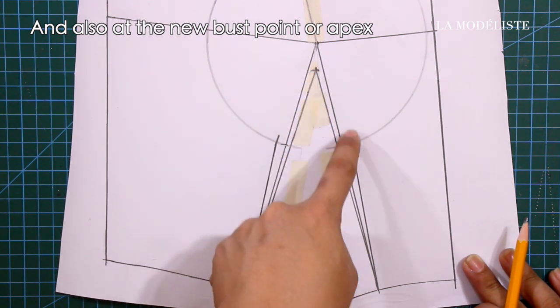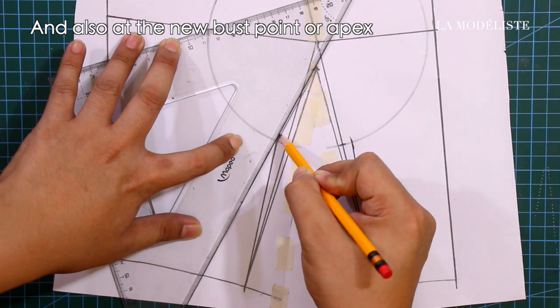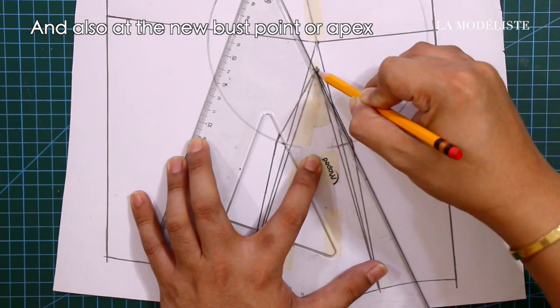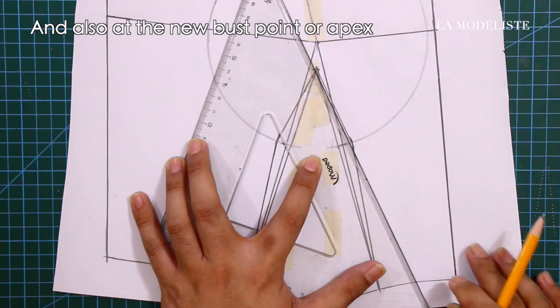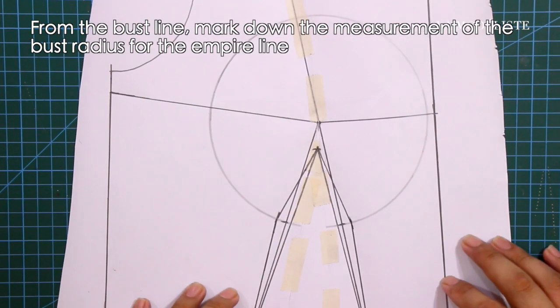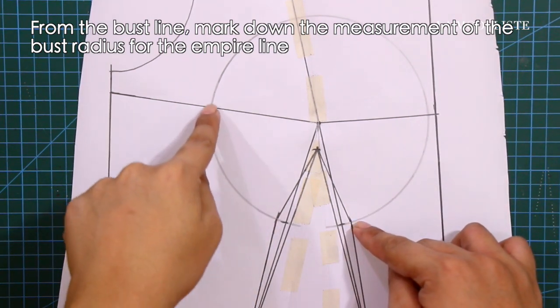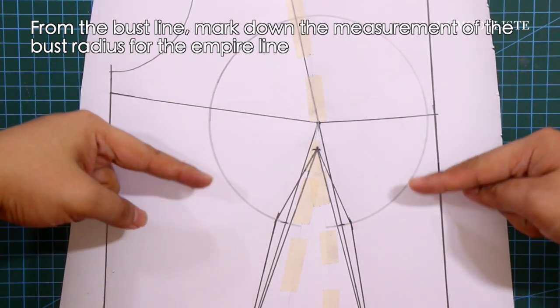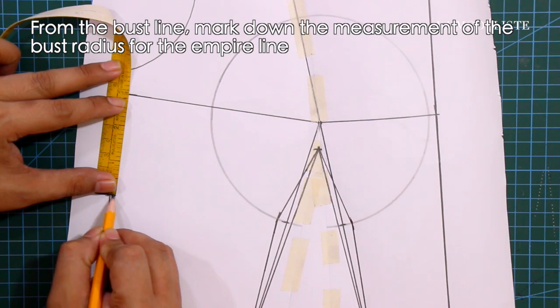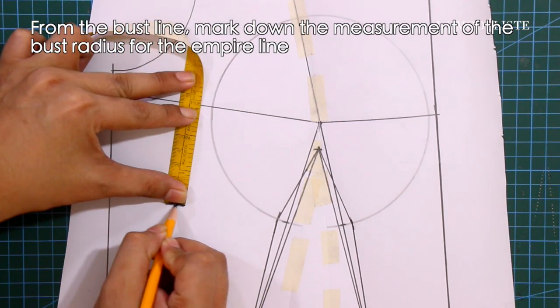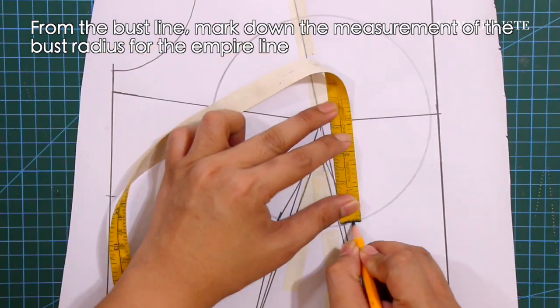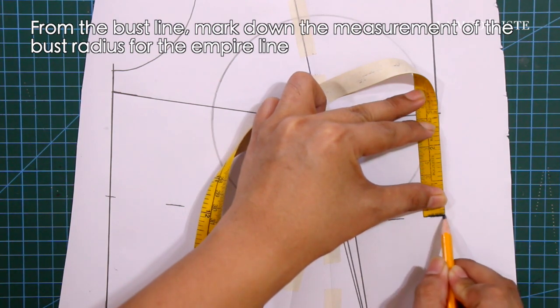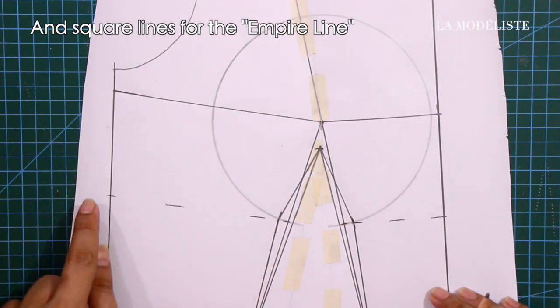And square in diagonal lines also at the new bust point or apex. From the bust line, mark down the measurement of the bust radius for the empire line.